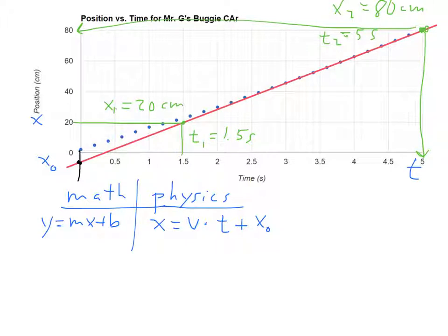So to find our slope now, we're going to do a rise over run. Slope equals a rise over run. And the rise is going to be the change in x. The run is going to be the change in time. And the change in x is going to be the difference between x₂ and x₁, because that's how you calculate the change of something. Subtract. And we'll have t₂ minus t₁.